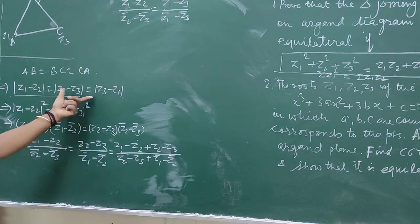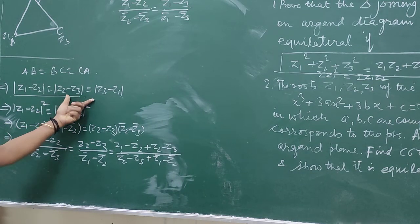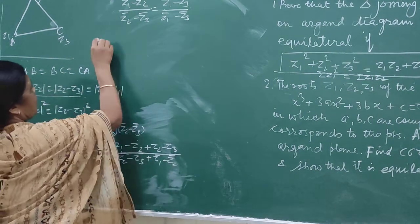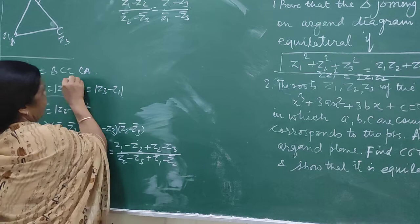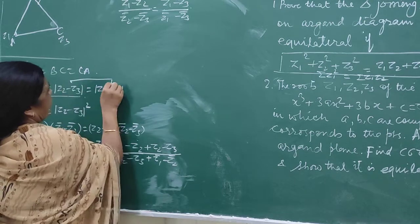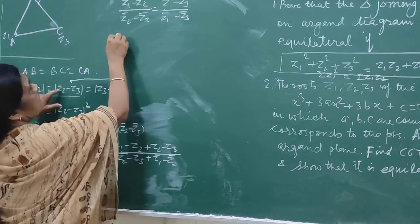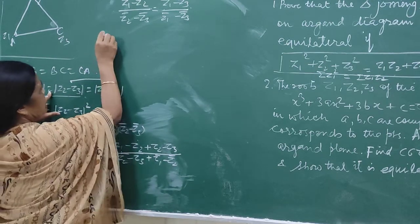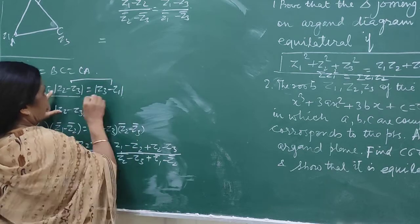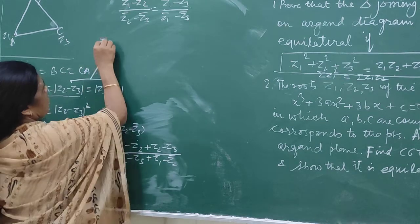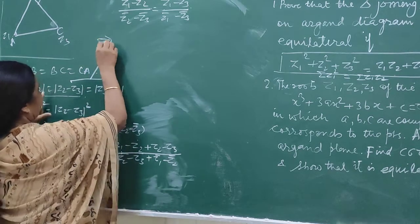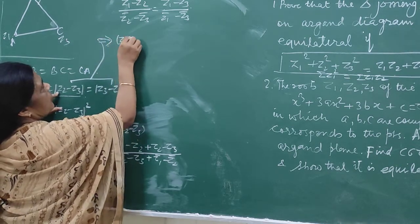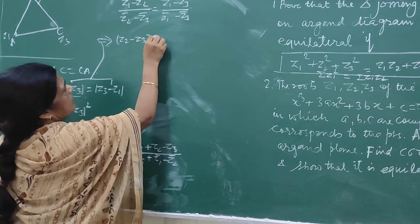Now we take both these results — this result and this result. We square them, so these results imply: Z2 minus Z3.